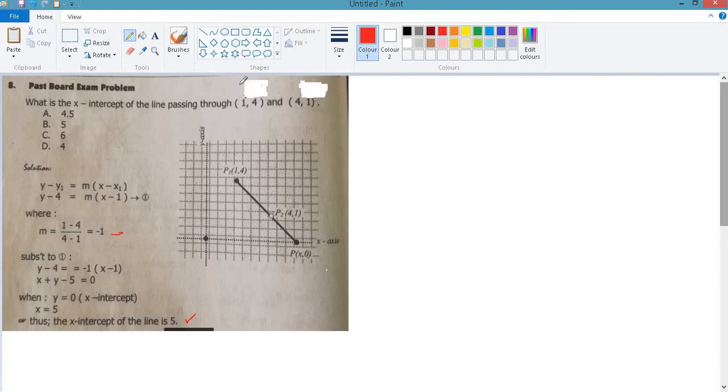1,4 will be point 1 because it is the first point given, while 4,1 will be point 2 because it is the second point given. If we plot this, point 1 is here, then this is point 2.